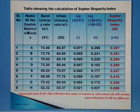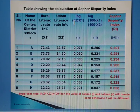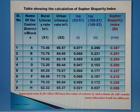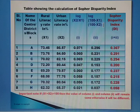To find Column 1, use the formula log(x2 / x1). Here x2 is 86.57 and x1 is 73.46. Dividing x2 by x1 and taking the log gives 0.071. Column 2 uses log((100 − x1) / (100 − x2)), so here 100 minus 73.46 divided by 100 minus 86.57.